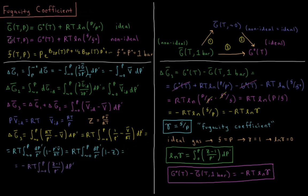For a non-ideal gas, we derived in the previous video that its molar Gibbs energy as a function of temperature and pressure equals the standard Gibbs energy at that temperature plus RT ln(f/f°), where the standard fugacity f° is once again one bar.